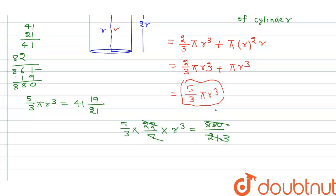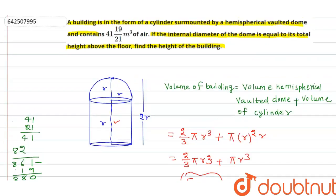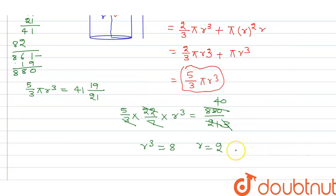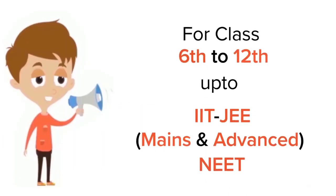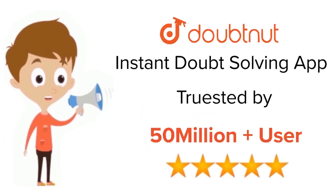After simplification, r³ = 8, therefore r = 2. Since this is in meters, the radius r is equal to 2 meters.